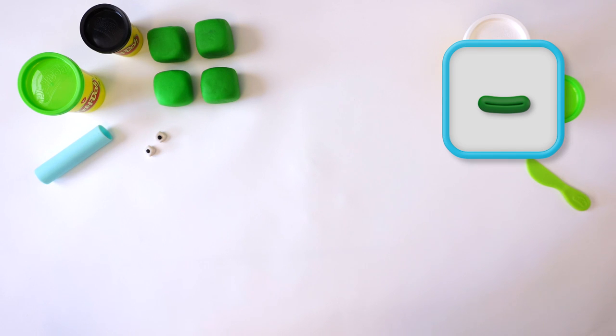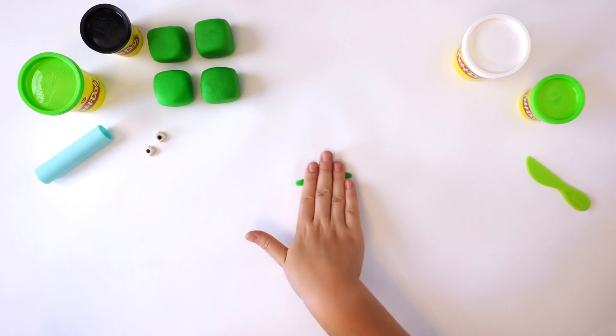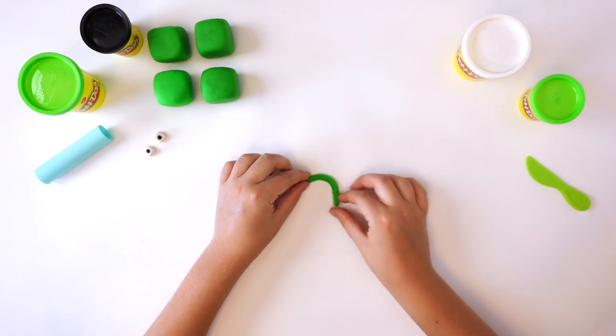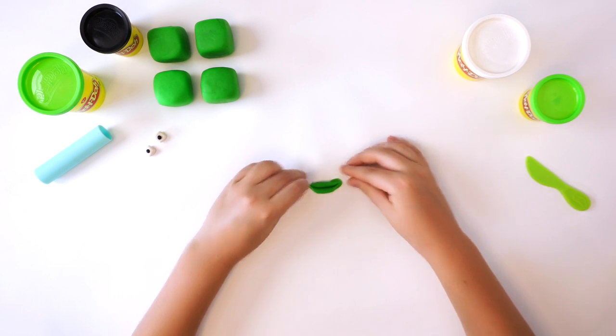Next, we need one mouth. To make the mouth, make a long snake out of the green Play-Doh compound. Fold it in half and pinch at both ends. There we have it. One mouth.